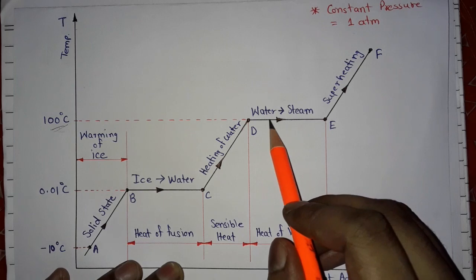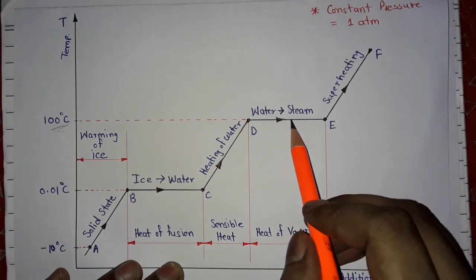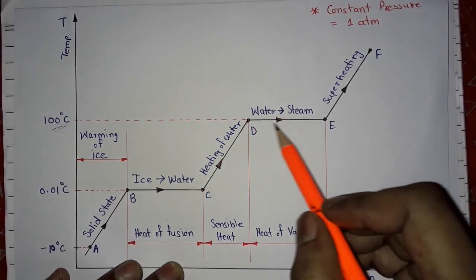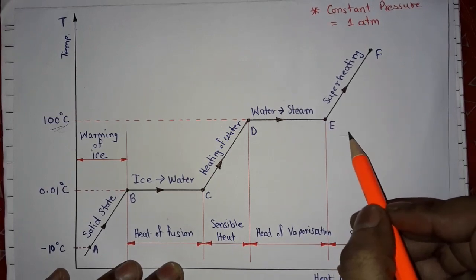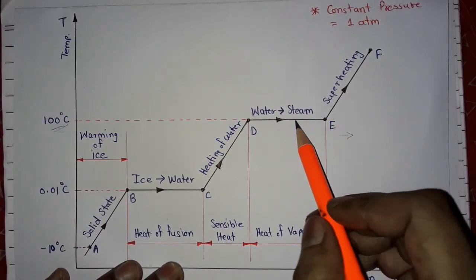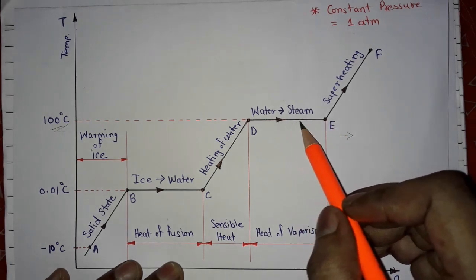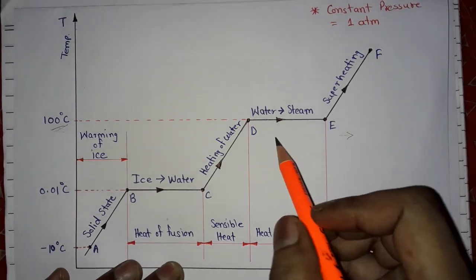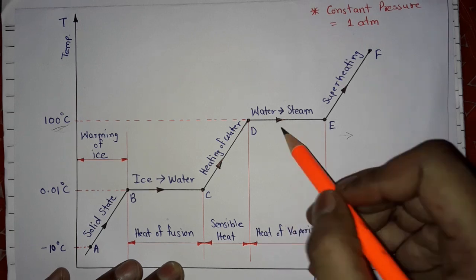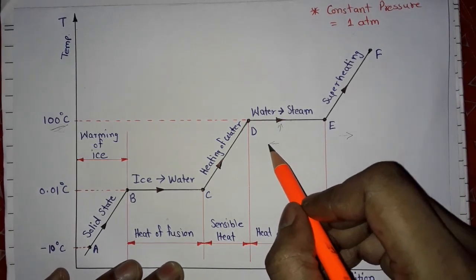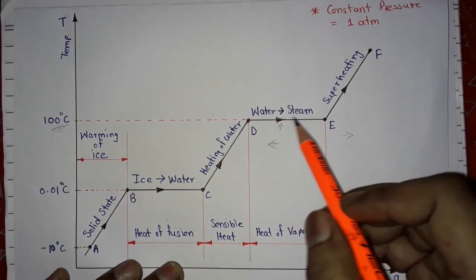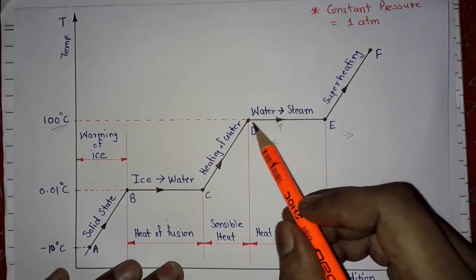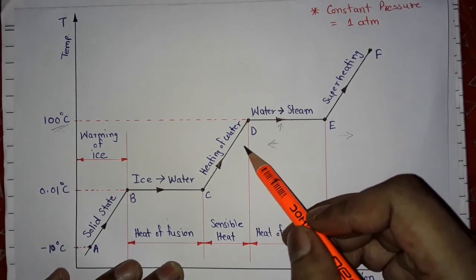At this line at 100 degrees Celsius, the beginning of condensation and boiling of water occurs. If we go in the rightward direction, there is the beginning of the boiling process. If we move in the leftward direction, there is the condensation process — the water starts to condense.